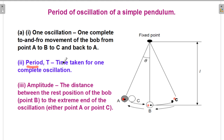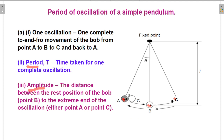The period of time T is the time taken for one complete oscillation. Amplitude is the distance between the rest position of the bob (point B) to the extreme end of the oscillation, either point A or point C.